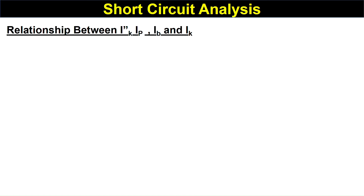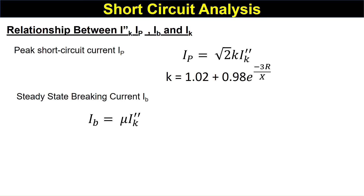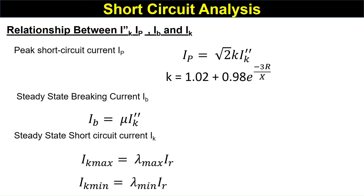There are certain relationships between the short-circuit current terms. The Peak Short-Circuit Current Ip equals √2 · k · I″k, where I″k is the Initial Symmetrical Short-Circuit Current and k depends on the R/X ratio. The breaking current IB equals μ · I″k, where μ is obtained from IEC 60909 tables. The Steady-State Short-Circuit Current Ik can be found as λmax · IR or λmin · IR, where λmax and λmin values are also from the IEC 60909 tables.